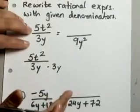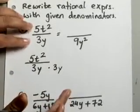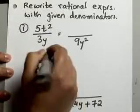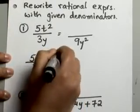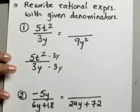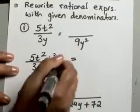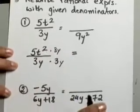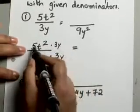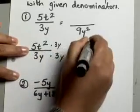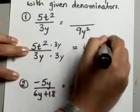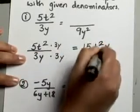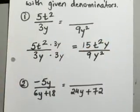Now I don't want to change the value of my rational expression here, I still want my value to be the same. So if I multiply my denominator by some number, I multiply my numerator also by that same value. So if I multiply the denominator by 3y, I multiply the numerator by 3y also, and this will give me 15t squared y over 9y squared.